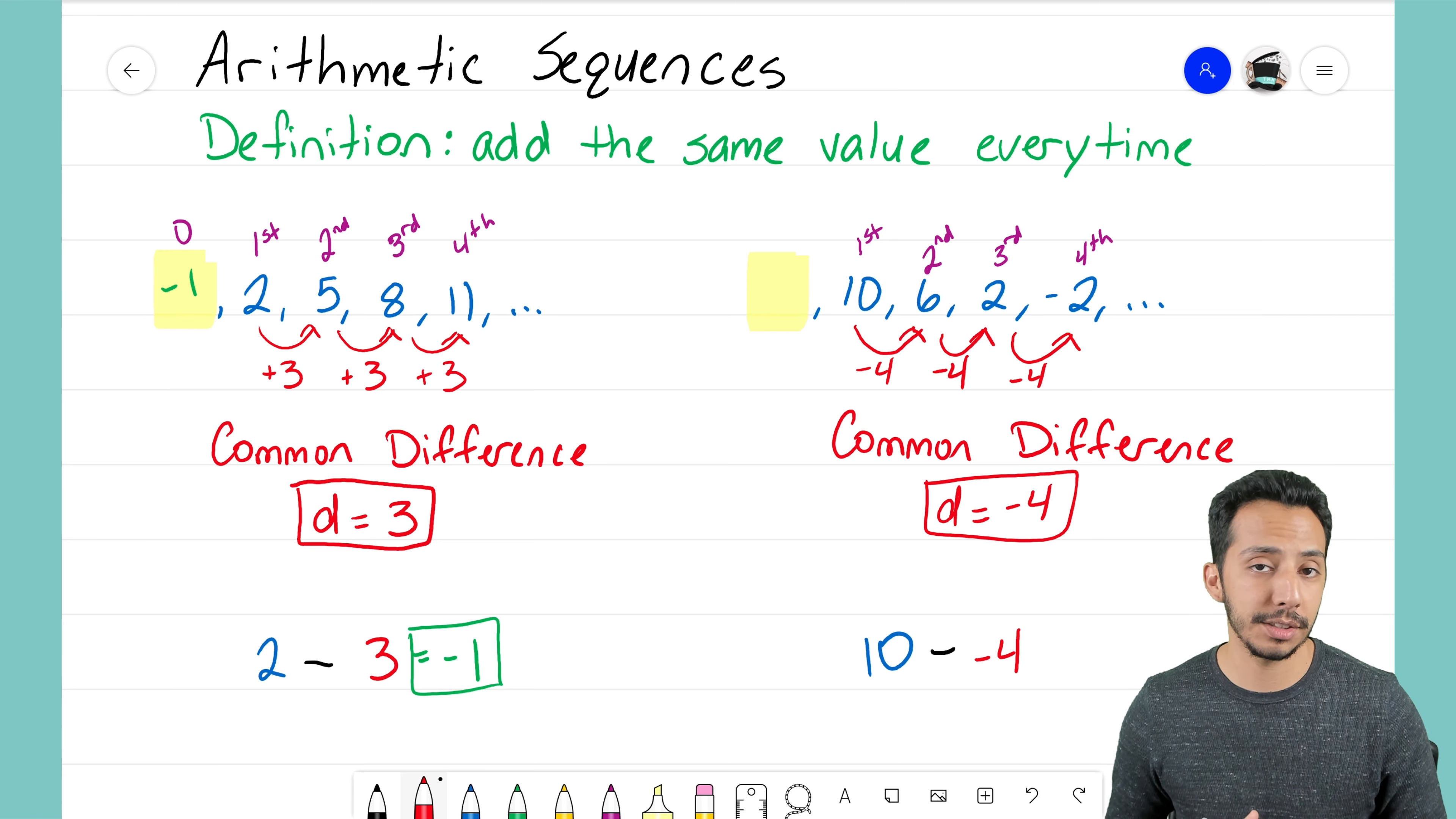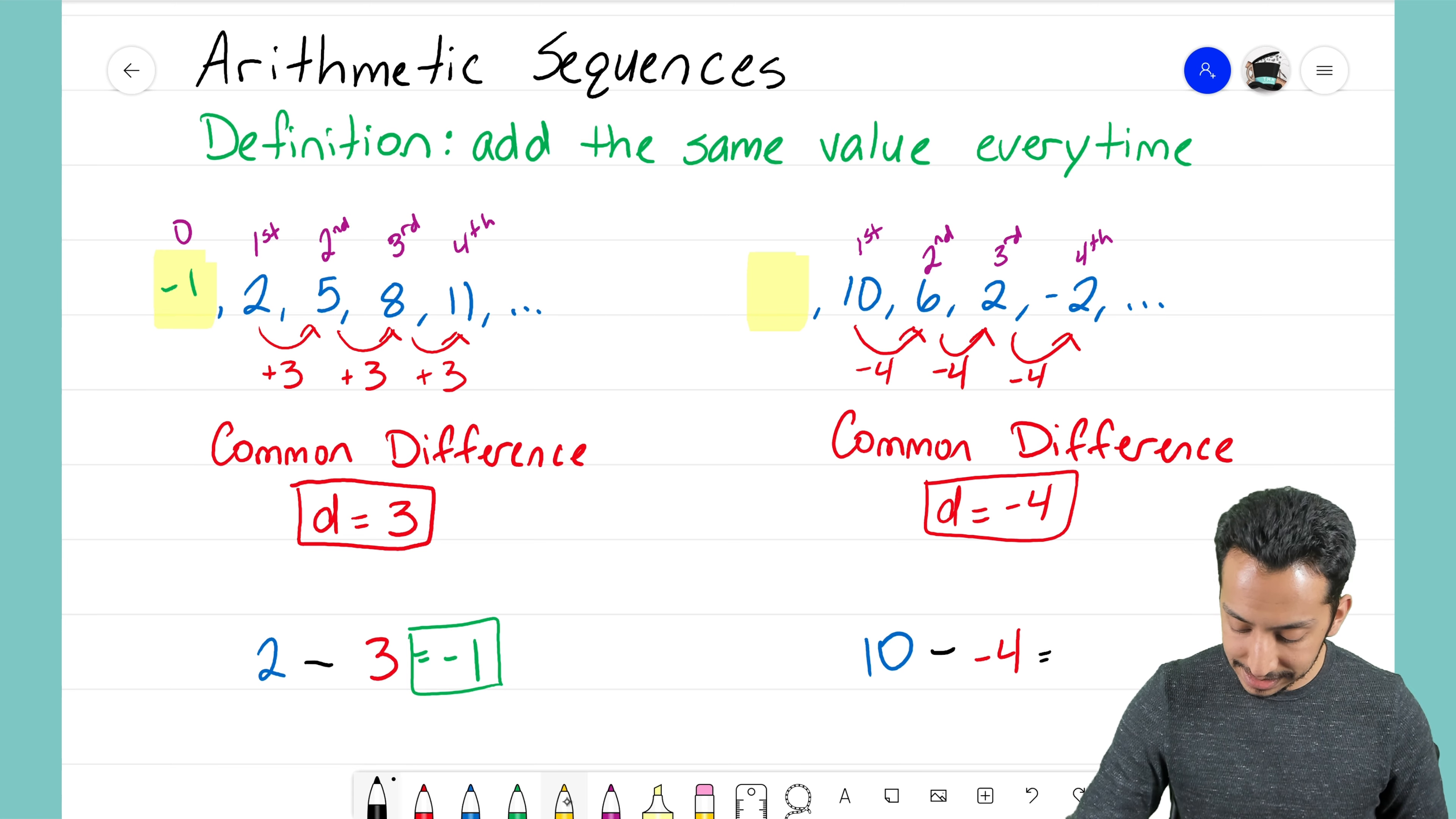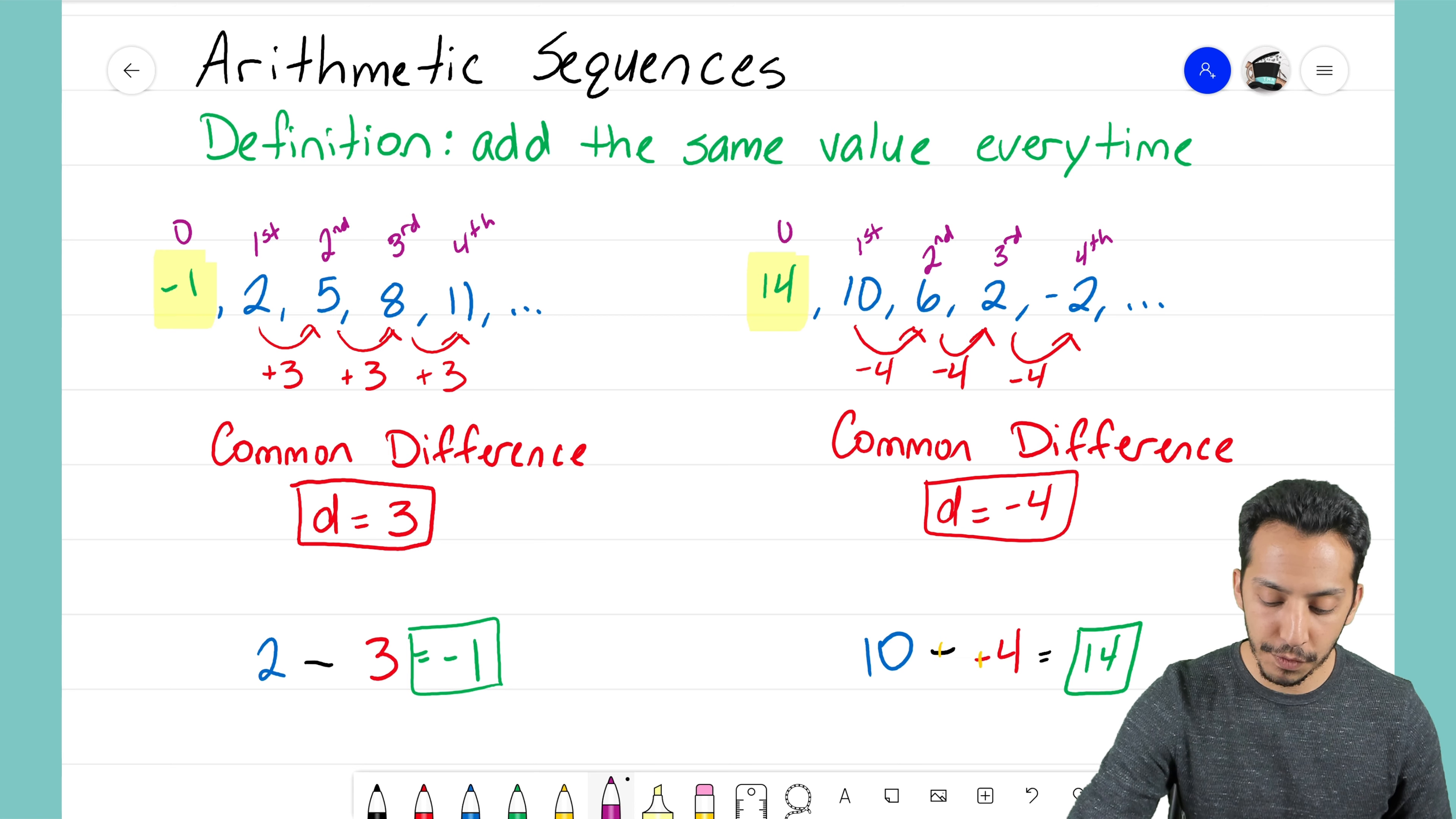Right, our common difference was negative. Remember, this sequence was decreasing, so that means this number here in front of 10 should be larger than 10. And when I end up simplifying this, 10 minus negative 4, well 10 minus negative 4 is the same thing as just adding 4, and 10 plus 4 gives us 14. So now I know for that second sequence to the right that my zero term there is 14.